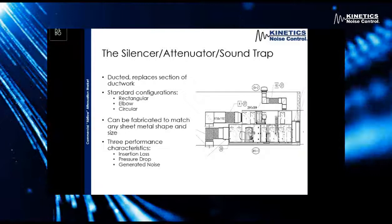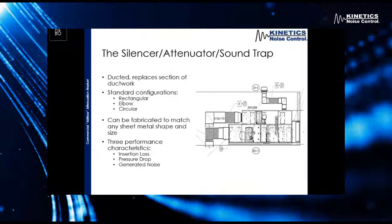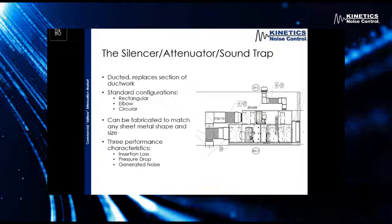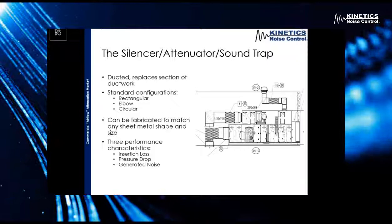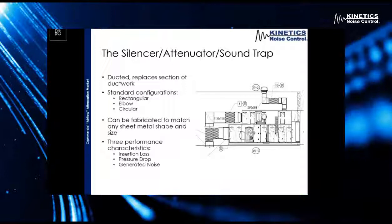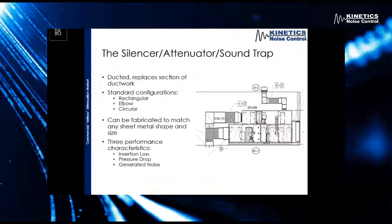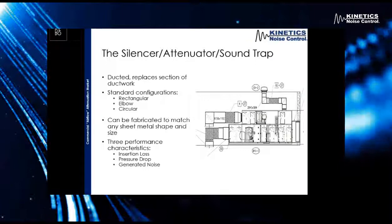So what is a silencer? I call it a silencer — some people call it an attenuator, it could be a sound trap. This tends to be a regional thing, but they all refer to the same piece of equipment. What it is, is it's designed to replace a piece of ductwork. Looking at the image on the right of the slide, those hatched areas are silencers used to apply return and exhaust air for that air handling unit. Our standard configurations for a silencer are rectangular, elbow, and circular, but we can pretty much fabricate these out of anything we can make with sheet metal — we have a lot of variation in custom designs we can do.